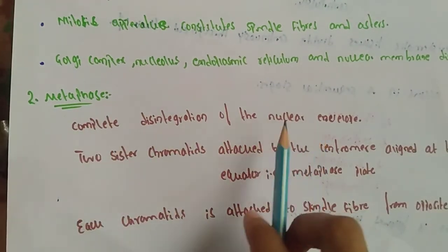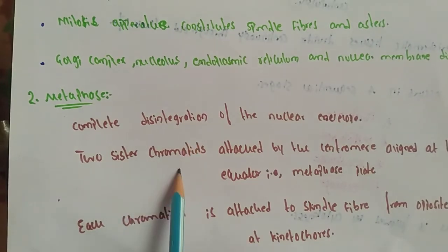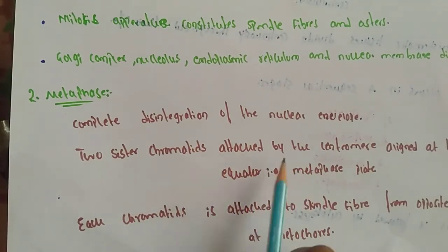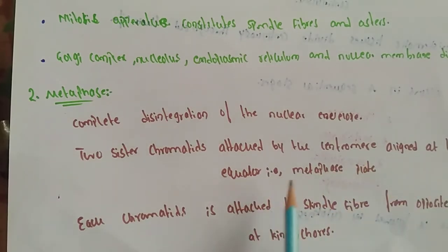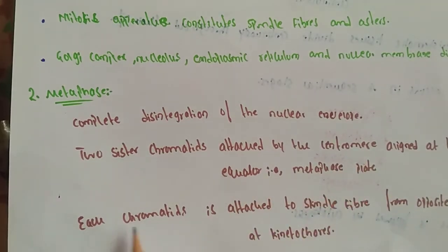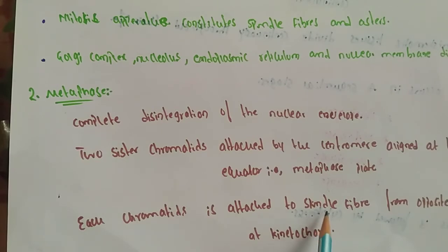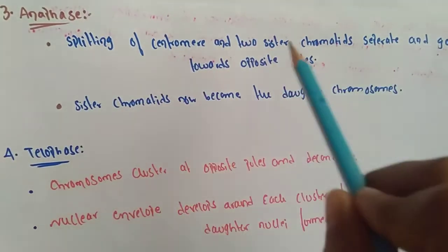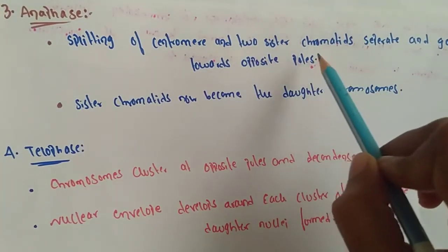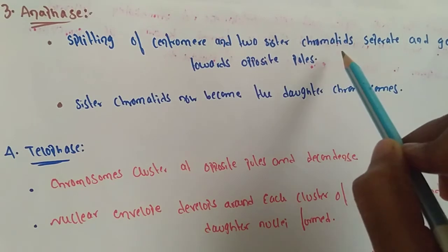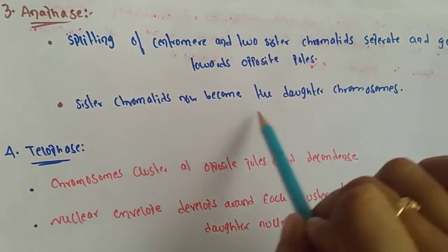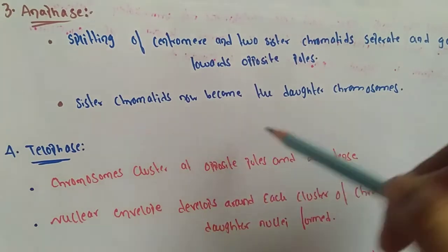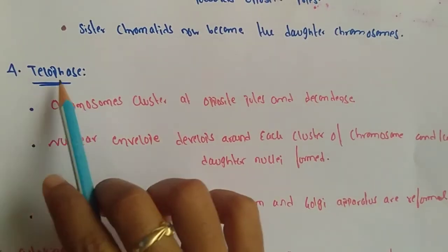In metaphase, there is complete disintegration of the nuclear envelope. Two sister chromatids attached by the centromere are placed at the equator — this arrangement is called the metaphase plate. Each chromatid is attached to a spindle fiber, which is a protein structure that divides genetic material from opposite poles at the kinetochores. In anaphase, the centromere splits and the two sister chromatids move toward opposite poles, becoming the daughter chromosomes.